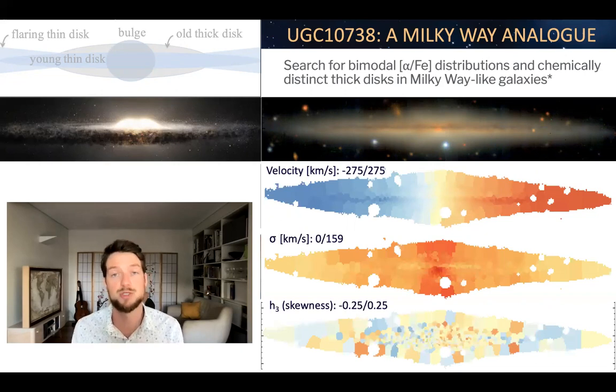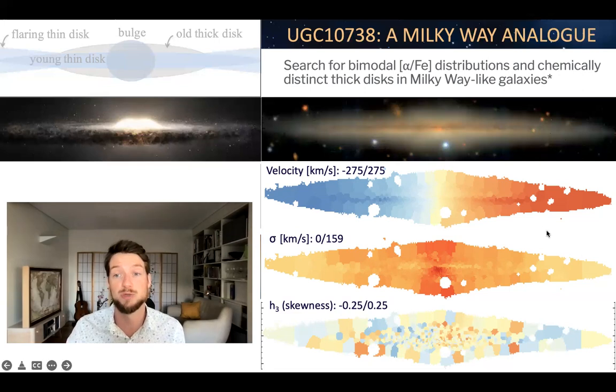We've also looked at the skewness of the line-of-sight velocity distribution, which tells you something about the type of orbits within this galaxy. Typical for a rotating edge-on galaxy without dust, you would see a strong anti-correlation between h3 and velocity. However, this is not observed in UGC 10738. This either means that the orbital components are more complex, or that we need to take into account the different distributions of dust as we're piercing through the galaxy along the line of sight.